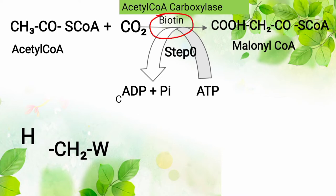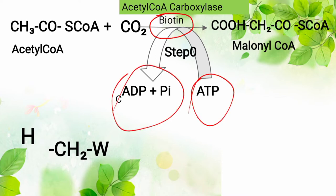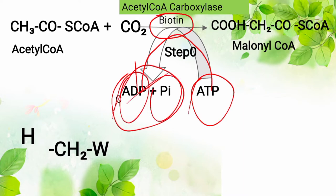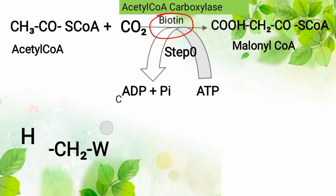Acetyl-CoA carboxylase needs the help of ATP for energy — it breaks down ATP to ADP and inorganic phosphate. From the name, acetyl-CoA carboxylase carboxylates acetyl-CoA by adding CO2 to acetyl-CoA.